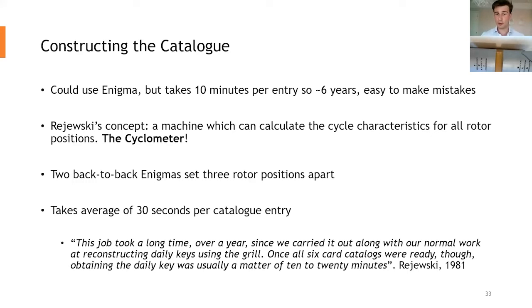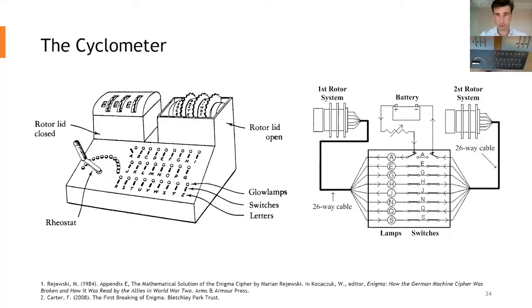Once all six card catalogues were ready, and that's six, because as Tim said, I know 3 times 2 times 1 different ways of loading in the three rotors. Obtaining daily keys was usually a matter of 10 to 20 minutes. It's absolutely outstanding. And so this is what the cyclometer looks like. As Tim was saying, it speculated that in 1939, that all existence of the cyclometer was destroyed, absolutely everything, any cyclometer, any documentation. The drawing on the left hand side is pretty much the only blueprint, if you like, of what it looks like. And that's drawn by Rejewski himself and his memoirs.